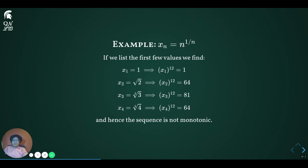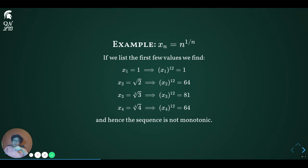Sometimes, whether a sequence is monotonic can be found by checking a few cases. Consider a sequence whose terms are n to the 1/n power. Plugging it in, we see that x1 equals 1, x2 equals root 2, x3 equals cube root of 3, and x4 equals the 4th root of 4. Raising each to the 12th power — since 12 is the least common multiple of 2, 3, and 4 — we find x1 to the 12th is 1, x2 to the 12th is 2 to the 6th which is 64, x3 to the 12th is 3 to the 4th which is 81, and x4 to the 12th is 4 to the 3rd which is 64. As the sequence first increases from x1 to x3 and then decreases from x3 to x4, we see that this sequence is not monotone.